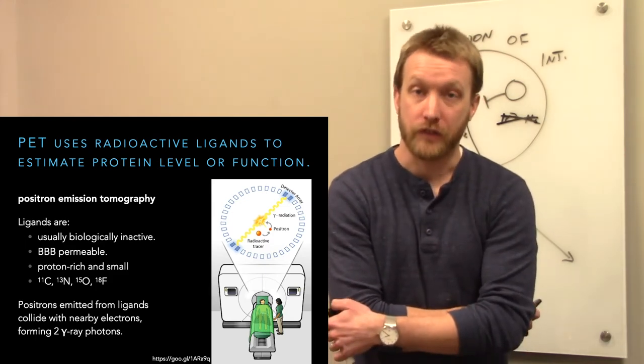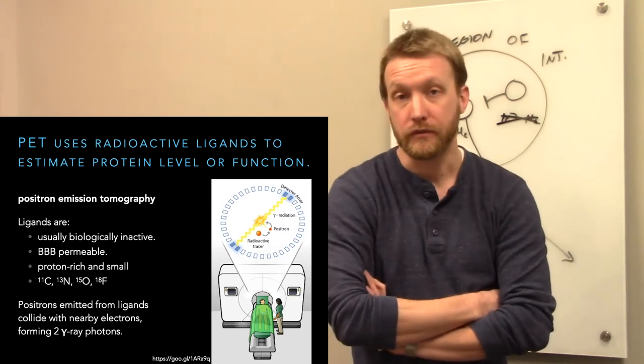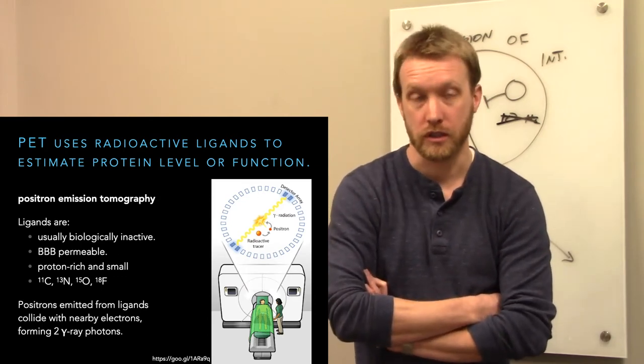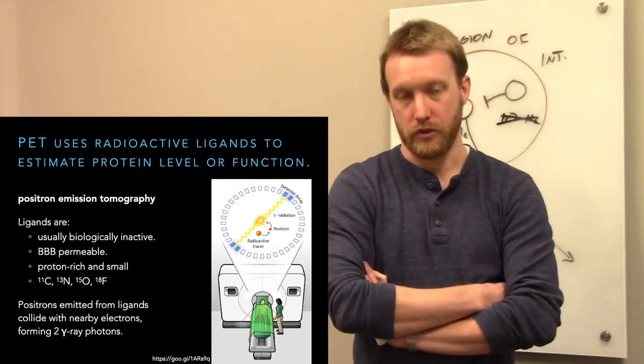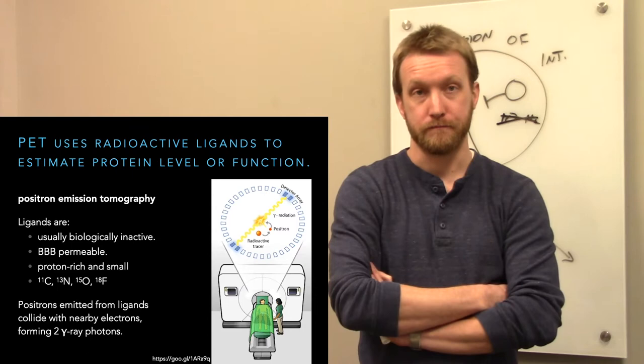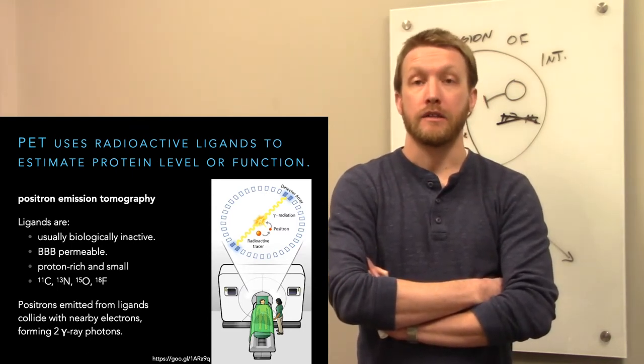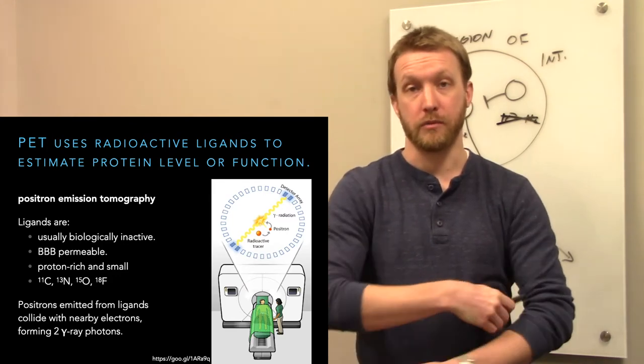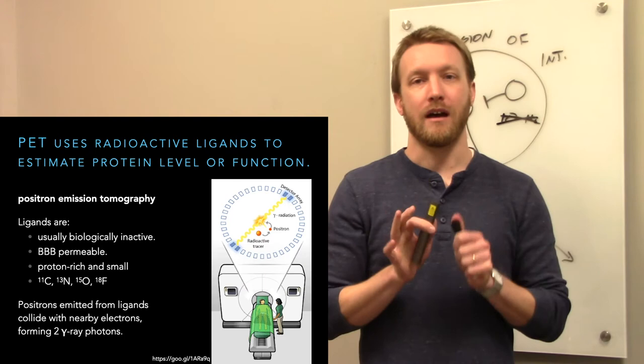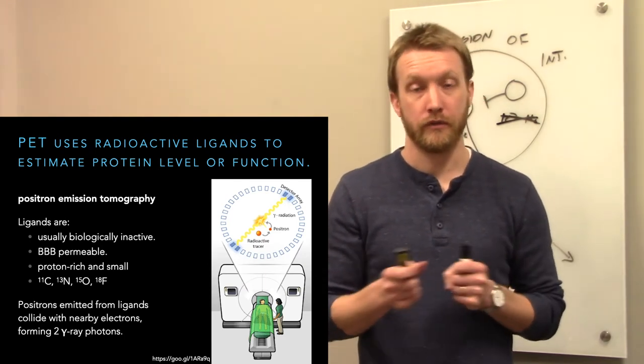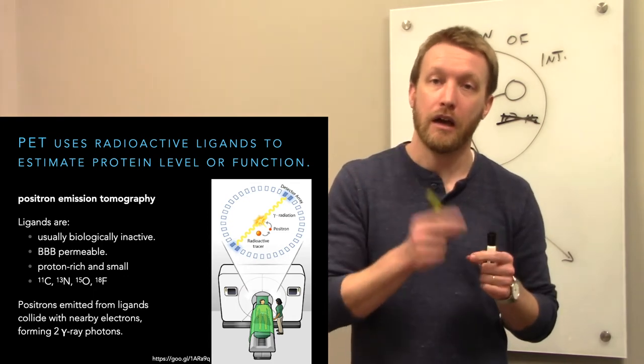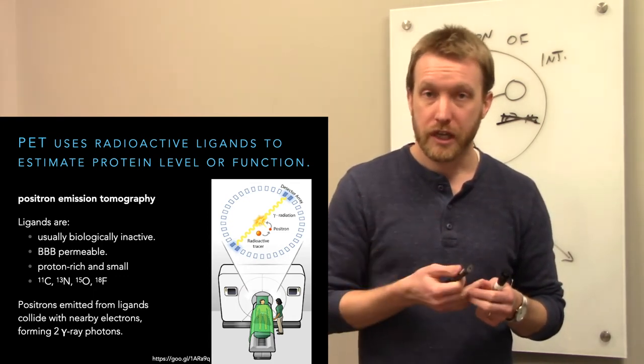So we have some other options for looking at function. Rather than looking at the activity of neurons, or really blood flow, we can look at the abundance of proteins. Positron emission tomography is one way of doing this. Between PET and SPECT, PET has better resolution. What we're going to do in this case is apply some radioactive ligands. These are blood-brain barrier permeable. So we'll inject it peripherally, it'll cross the blood-brain barrier, and it'll stick to something. Now it's important that it's not biologically active. We don't want to go turning on or turning off neurotransmitter receptors. But we do want the radioligand to stick, and then spit out radioactivity to tell us about how much of that protein is in the brain.